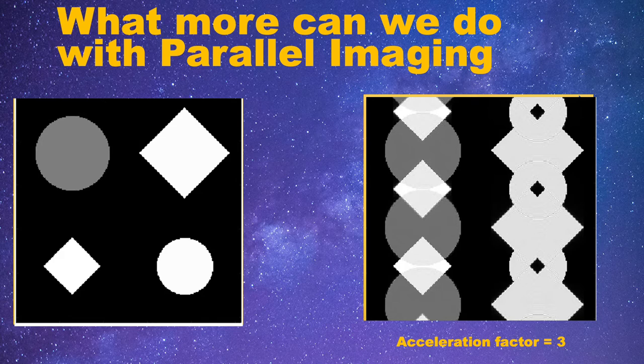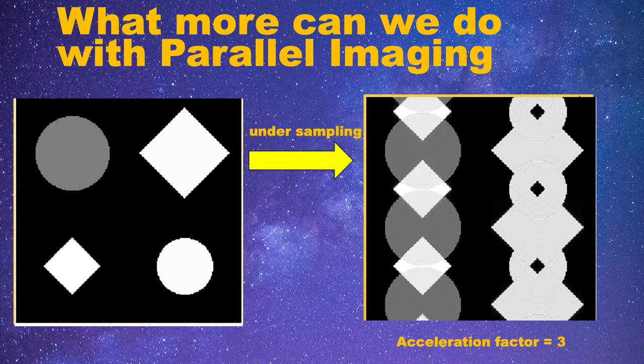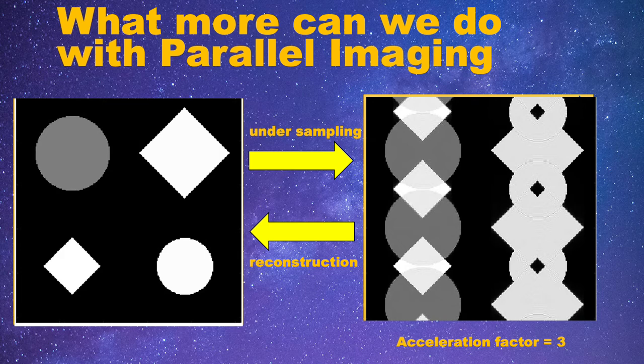Well, this is exactly what the core of parallel imaging is. We undersample the k-space, and parallel imaging can help us reconstruct the original image by using information from all these coils. In this way, we can use shorter scan time to get an image with reasonable quality.